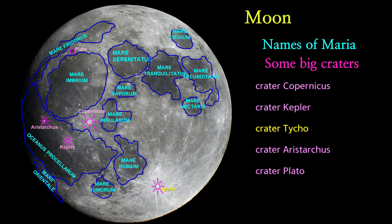Crater Tycho. Tycho is a prominent lunar impact crater located in the southern lunar highlands. Named after the Danish astronomer Tycho Brahe. Do you know who Tycho Brahe's assistant was?